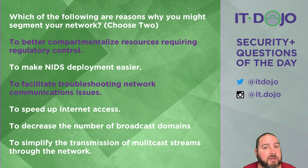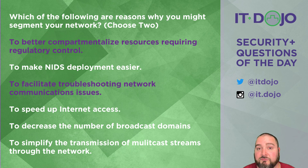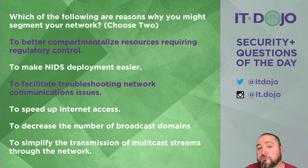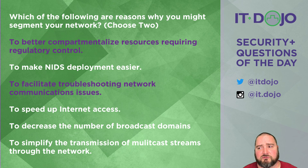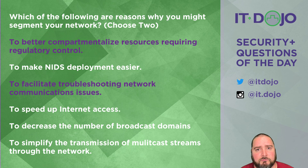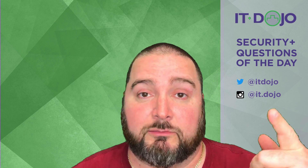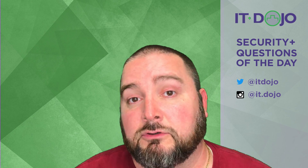The last option says to simplify multicast stream propagation through your network — negative. Having a segmented network complicates the forwarding of multicast data, because it leads you into needing multicast routing protocols. When you get into protocol independent multicast and all those other things, things just got more complicated. It does not simplify things at all as it relates to multicasting.